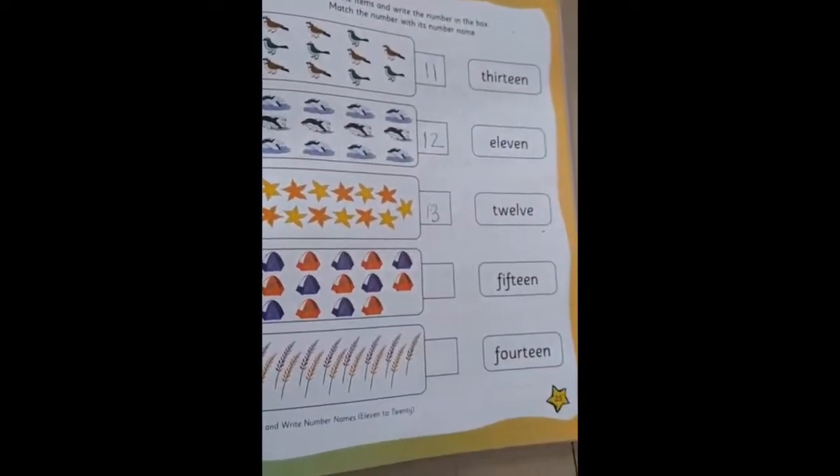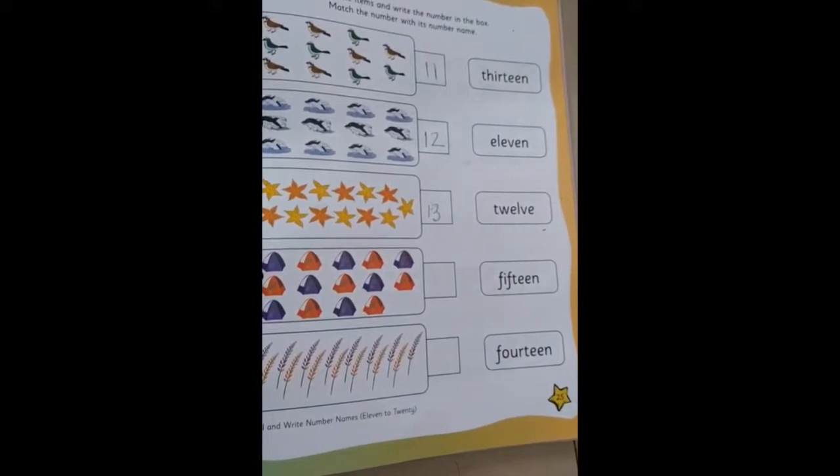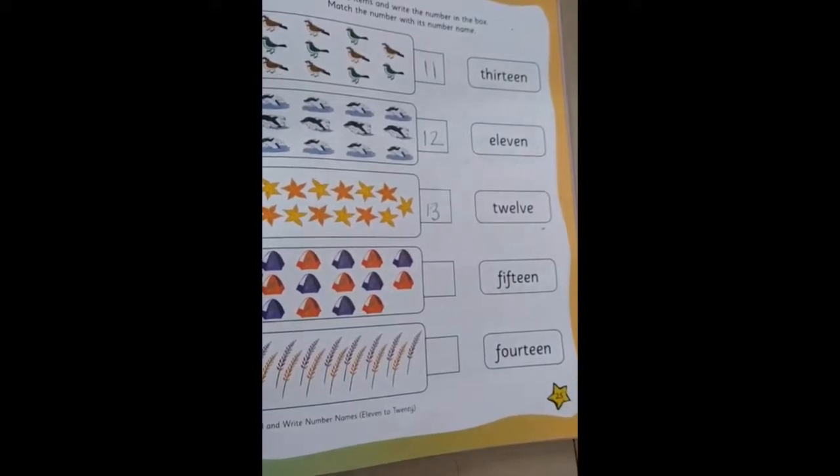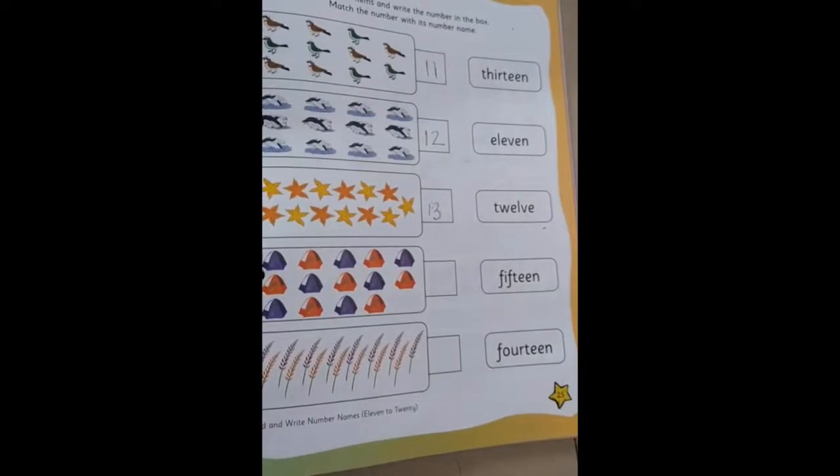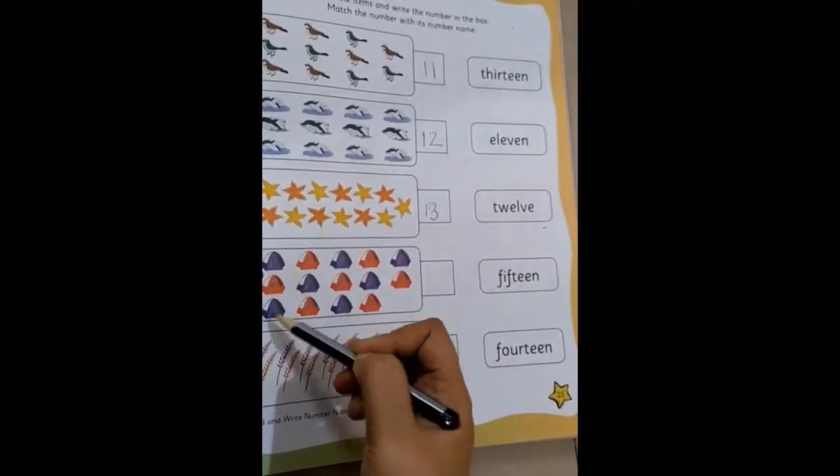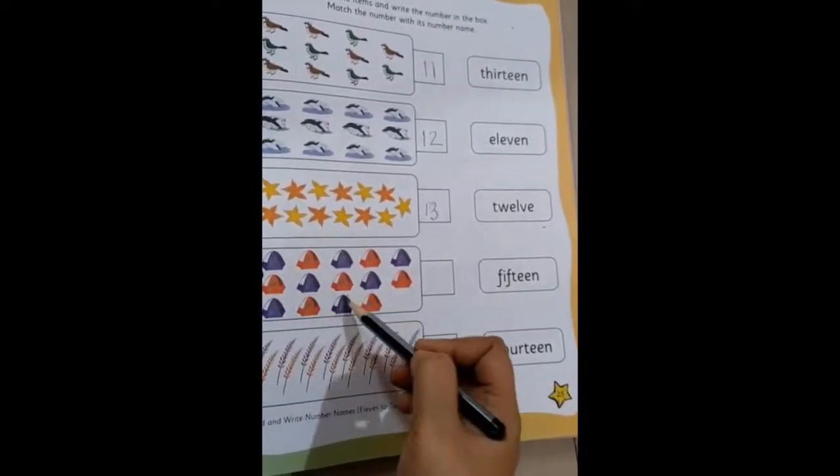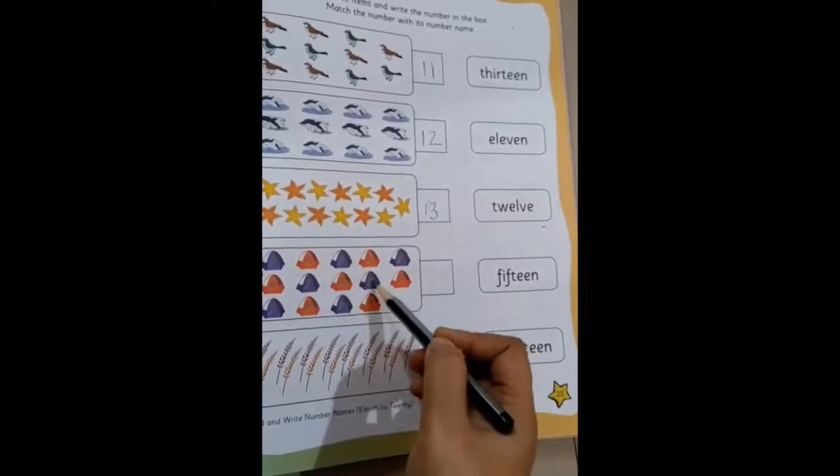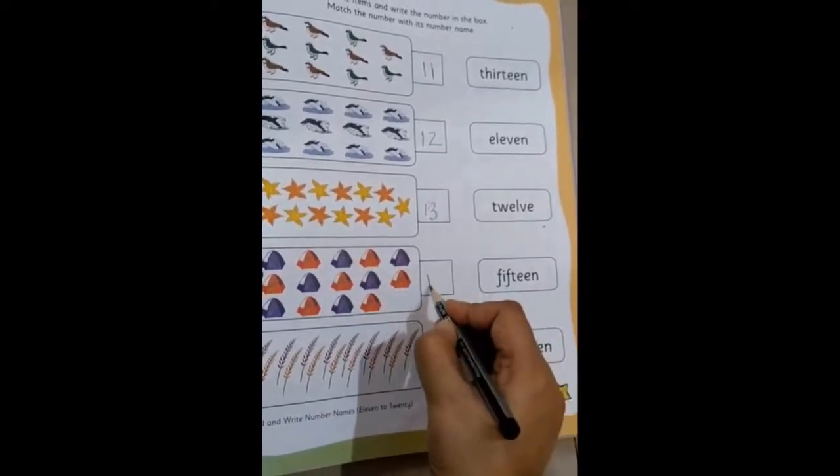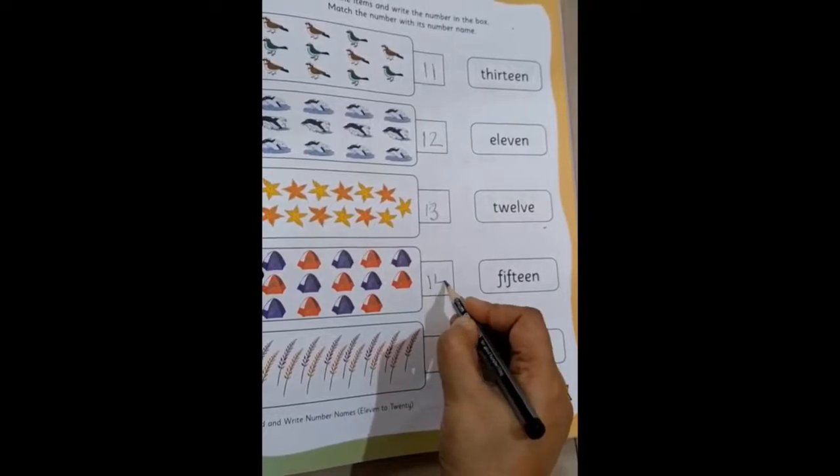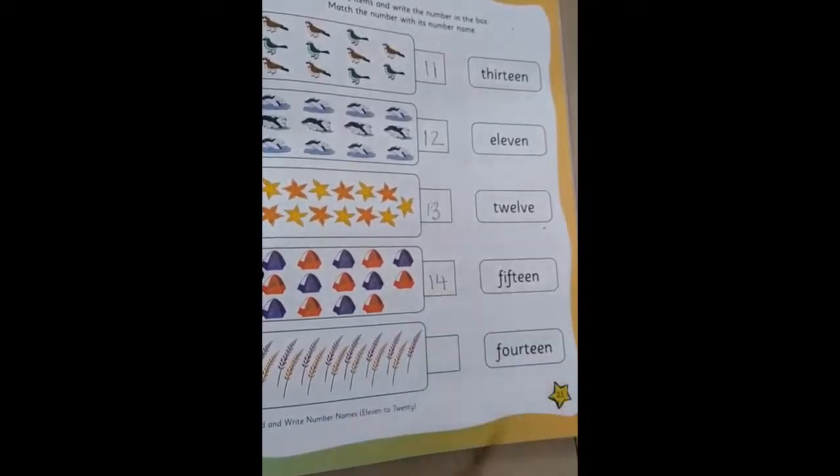The next one. What are these objects? Just like an igloo tent. So let's count how many tents are there: 1, 2, 3, 4, 5, 6, 7, 8, 9, 10, 11, 12, 13, and 14. So we write 14.